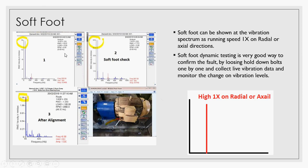This is one of the cases I found. You can see here the vibration level is about 16 millimeters per second. We used a spanner to loosen one of the hold-down bolts on the motor, and when we loosened it, the vibration level dropped from 16 to 6.5 millimeters per second on the running speed. When we revised the machine alignment, levels dropped from 6.5 to 1.35. So soft foot, you can really see it as 1X on the radial or axial direction.